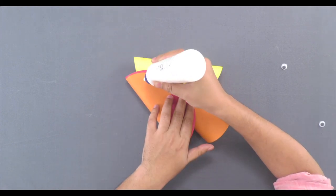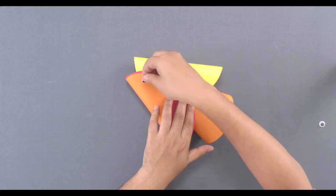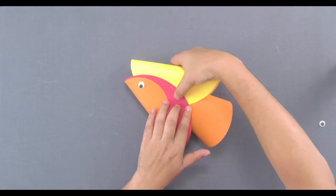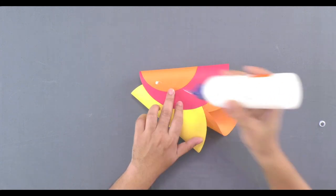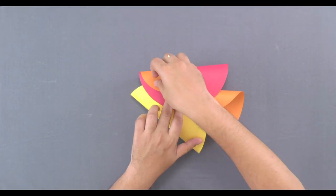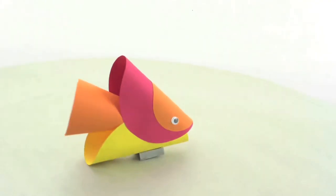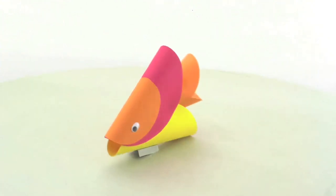Finally, apply some adhesive and paste the googly eyes on your paper fish to give it a complete look. And here is your paper fish that is ready to swim.